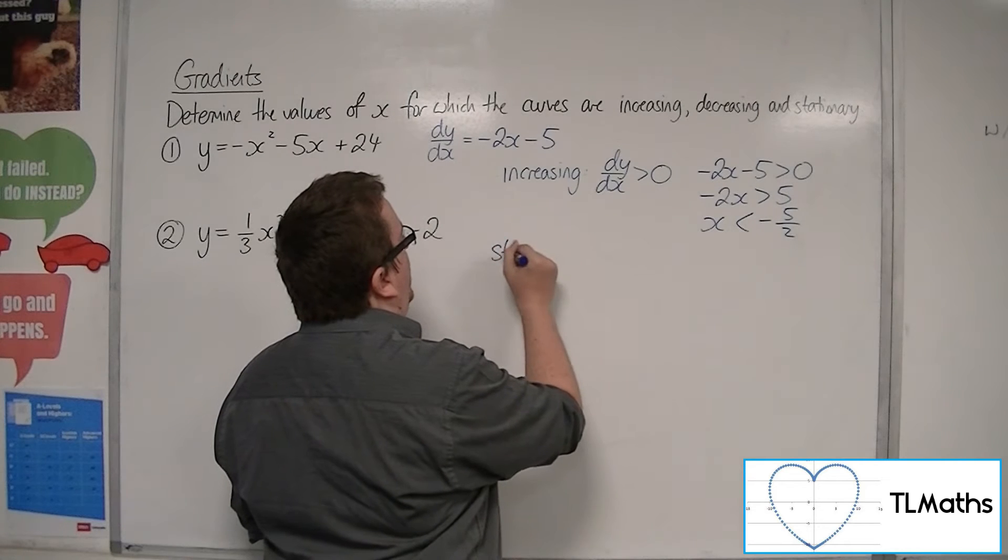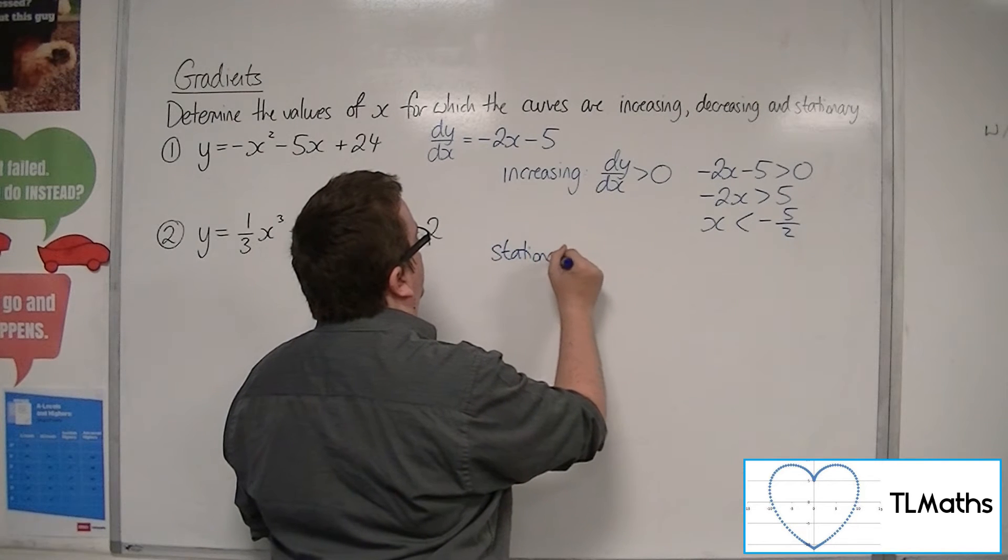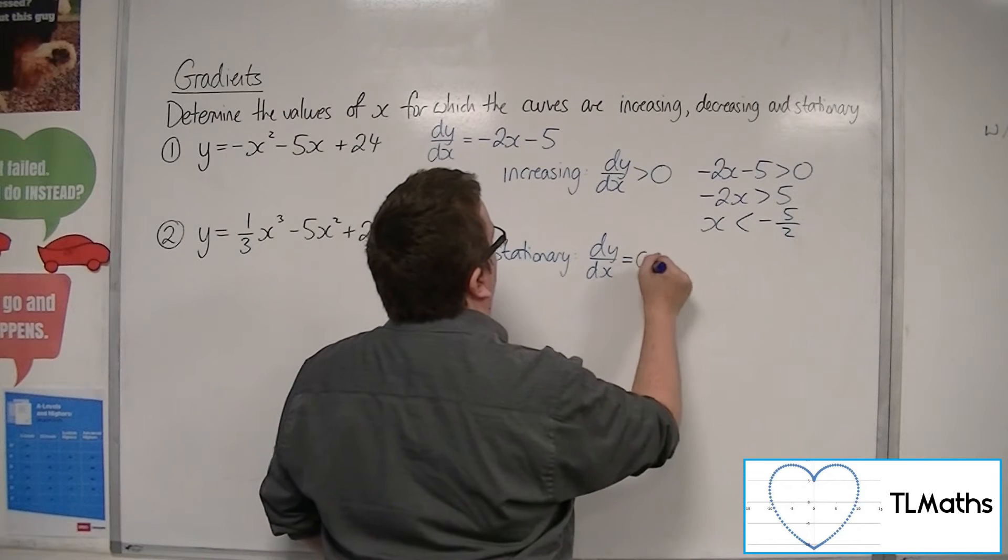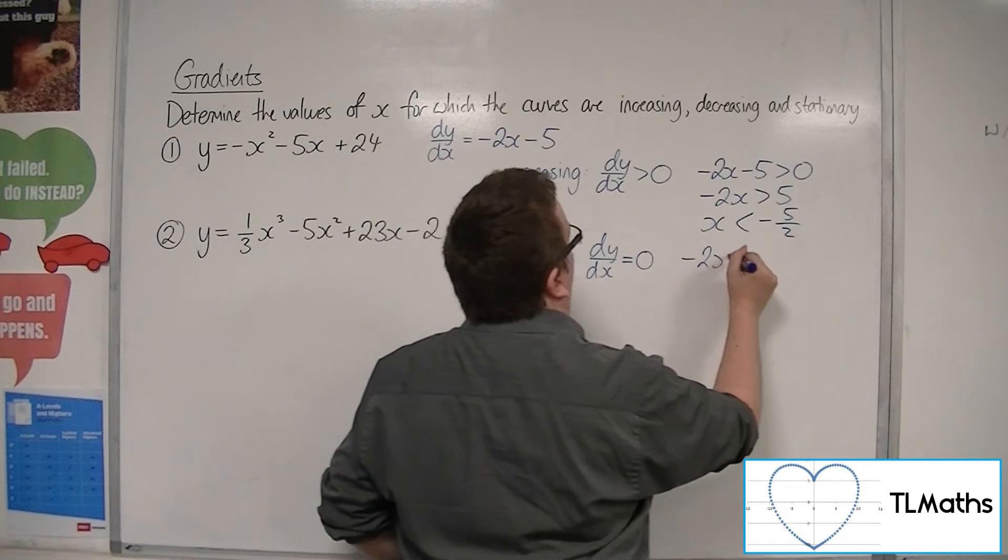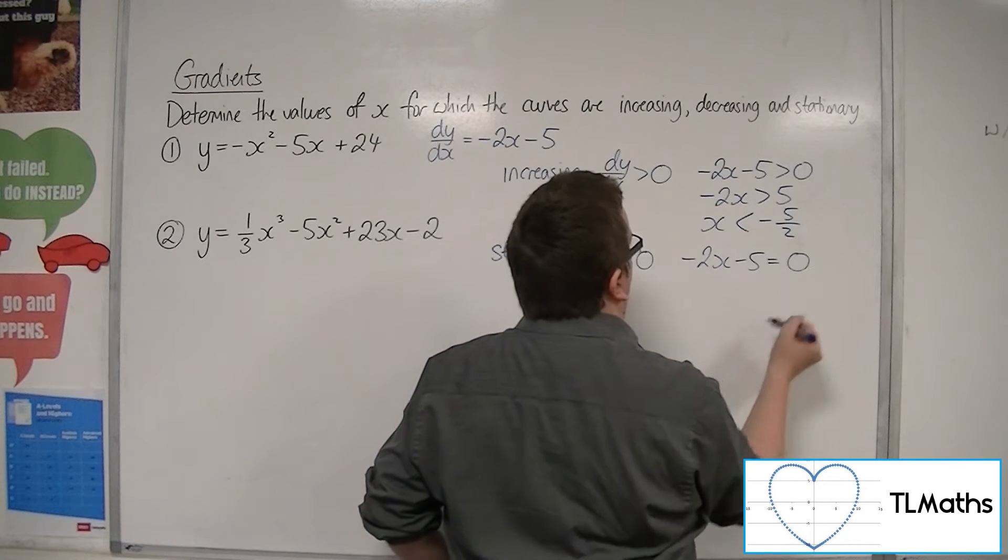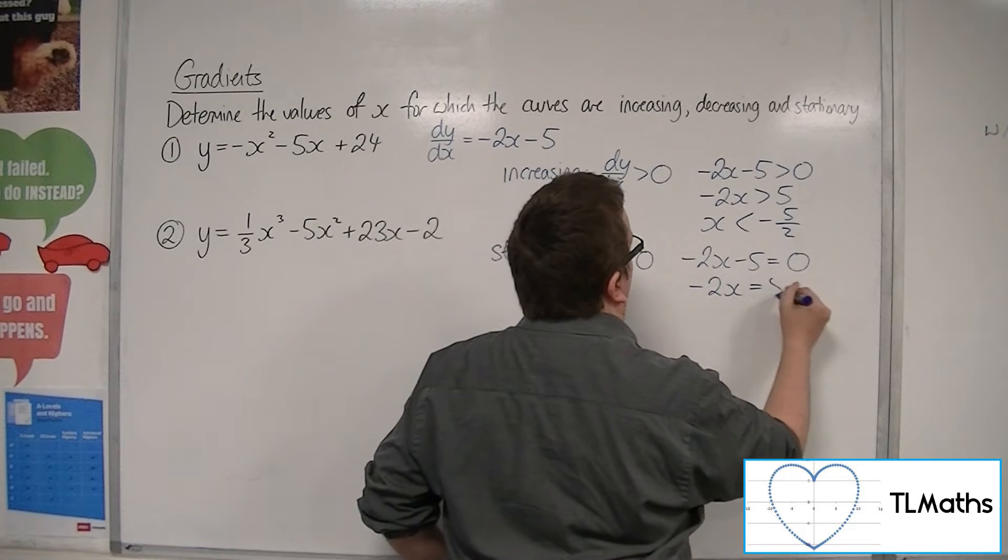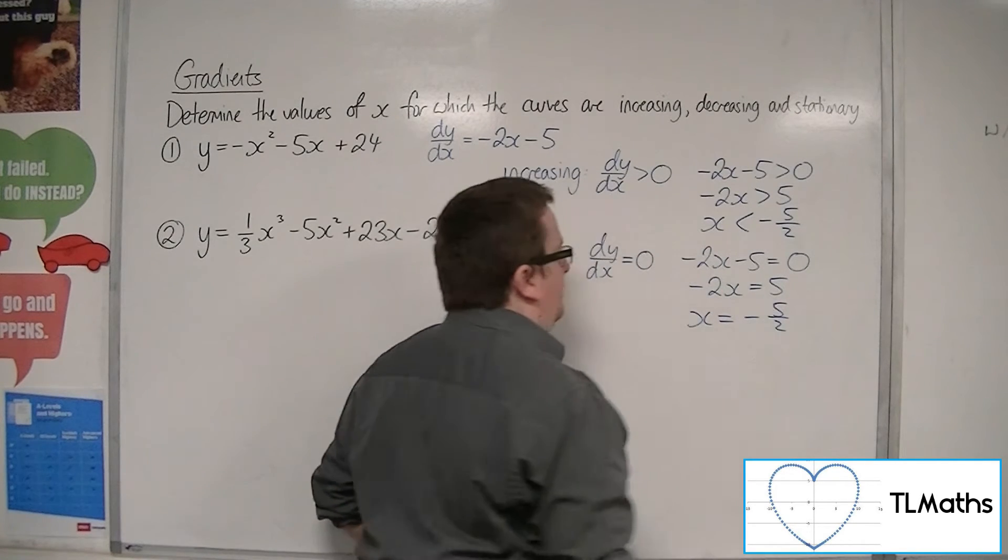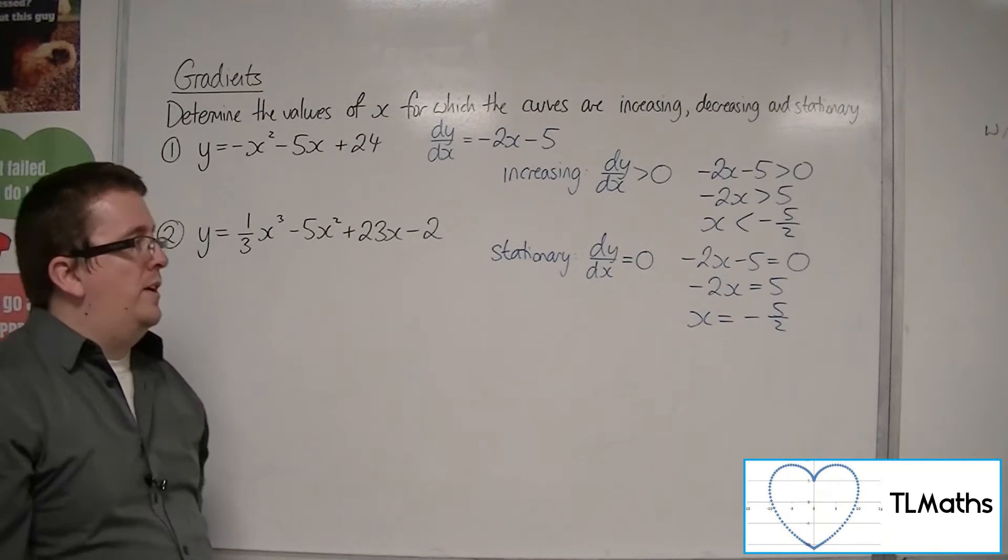Now, it will be stationary when dy by dx is 0. So, minus 2x minus 5 would have to be 0. So, minus 2x would be equal to 5. So, x would be equal to minus 5 halves. No great surprise there.